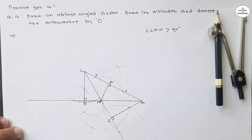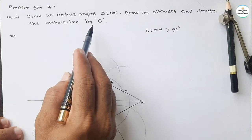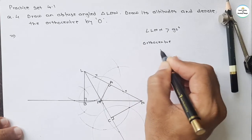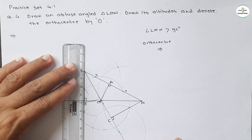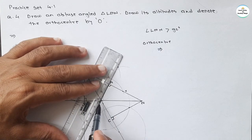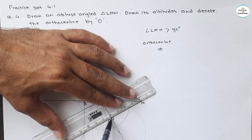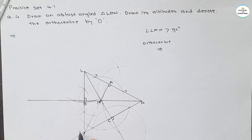NC is the altitude from vertex N to the opposite side LM. So we have drawn all three altitudes. Now what is asked — draw and denote the orthocenter. The orthocenter is the concurrence point of all three altitudes. Extend all three altitudes so that we can get the point of concurrence.